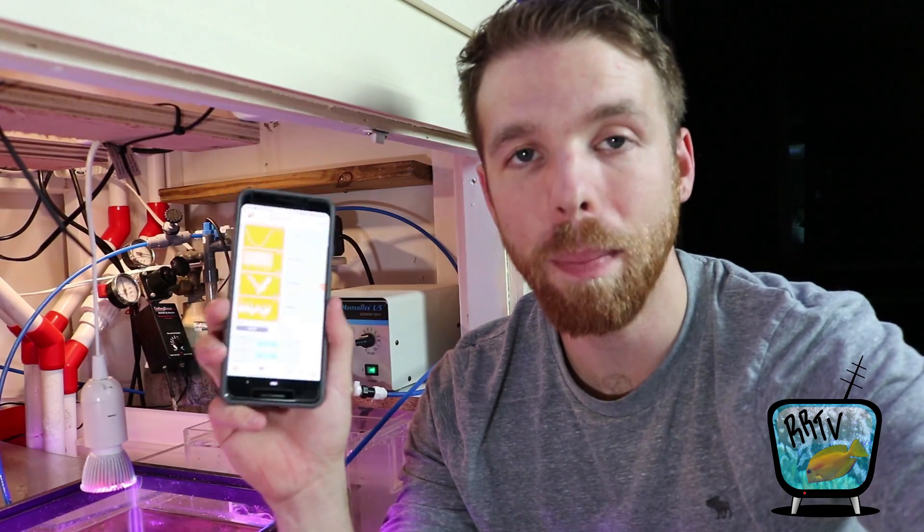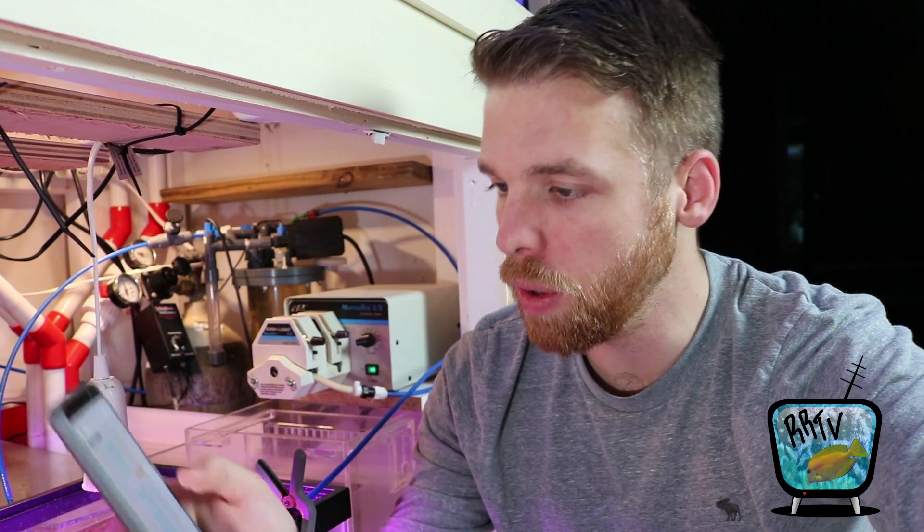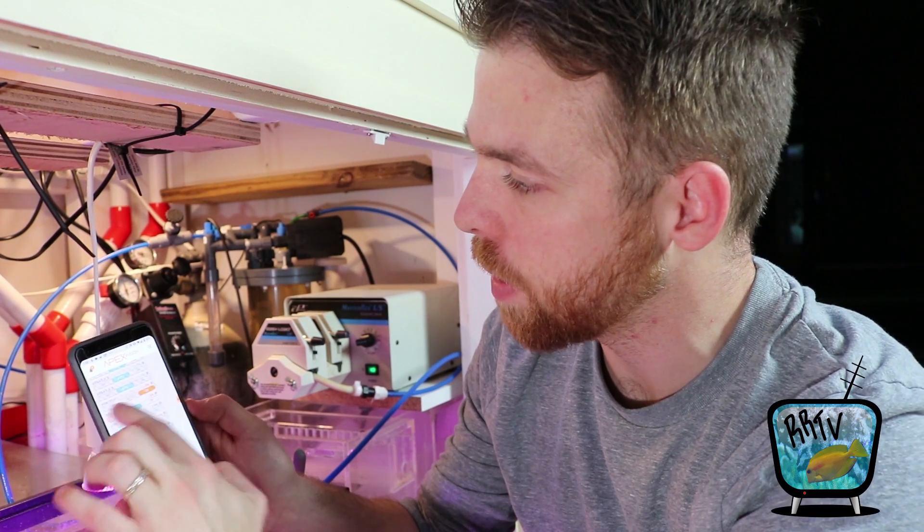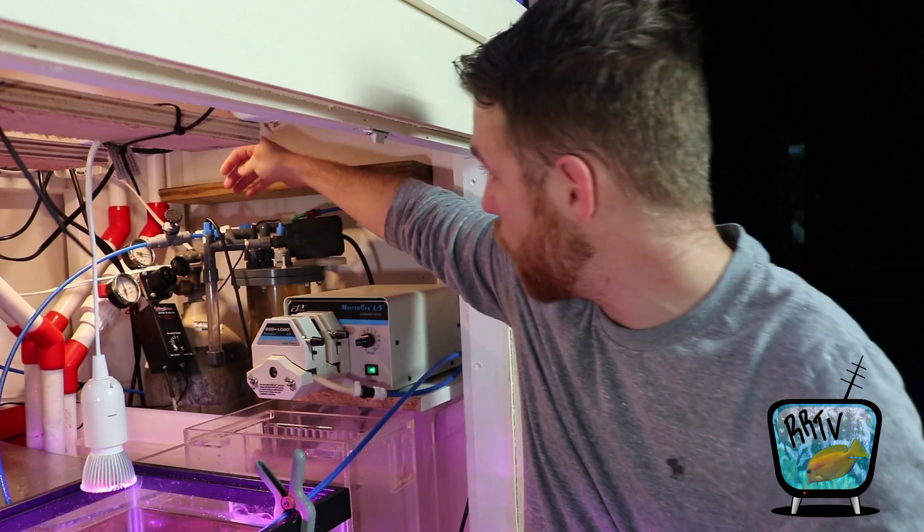I'm going to do that via my Apex. I'm going to open up my Apex Fusion app and go down to CO2 regulator and turn that off. I'm also going to turn off the recirculation pump. I don't want the recirculation pump mixing air and all that sort of good stuff.